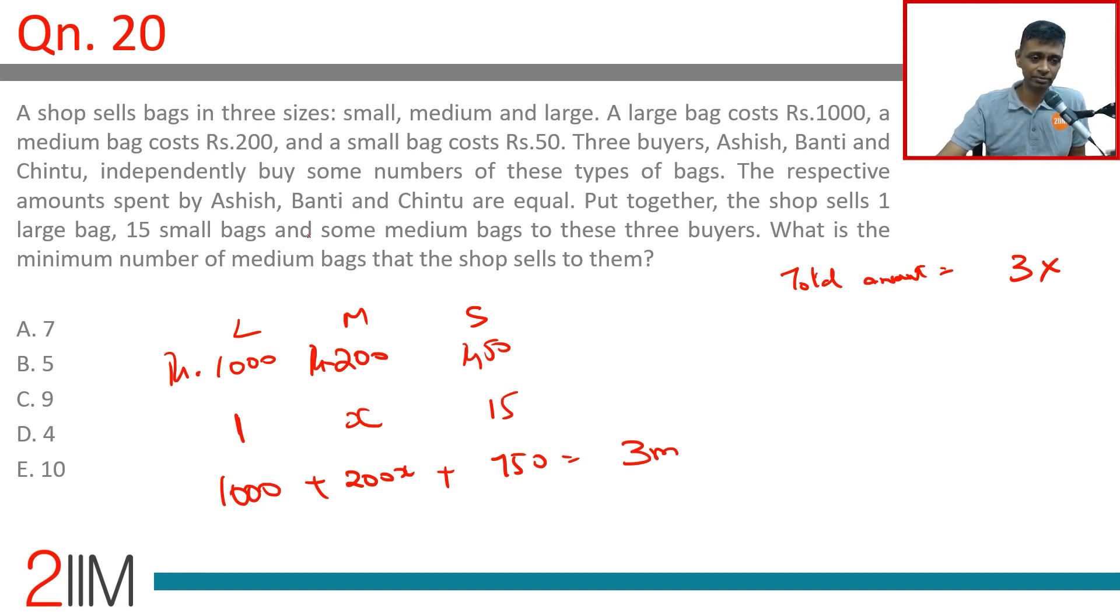That guy has got at least Rs. 1000 worth, so the total should be greater than or equal to 3000. It can be exactly 3000—the guy who gets the large bag gets only the large bag, then the remaining gets distributed as 1000 and 1000 in some combination of medium and small. But the total has to be at least 3000. These two add up to 1750.